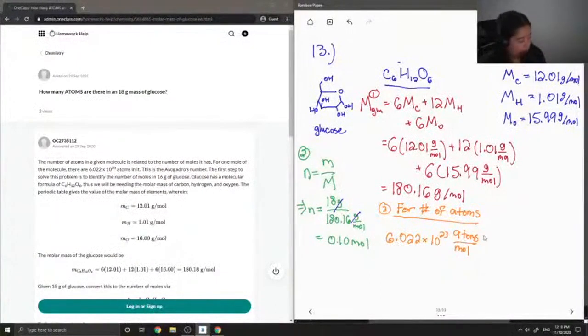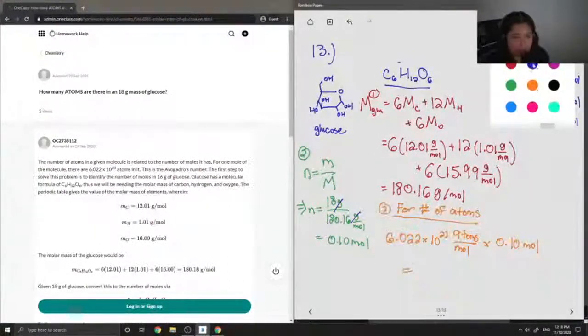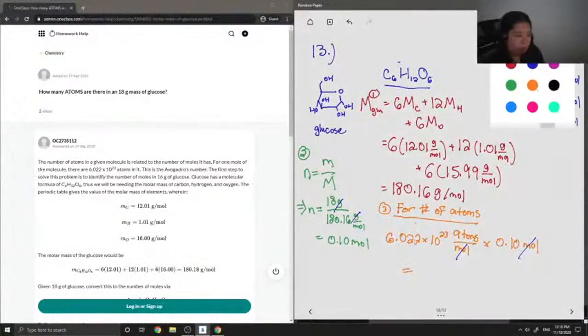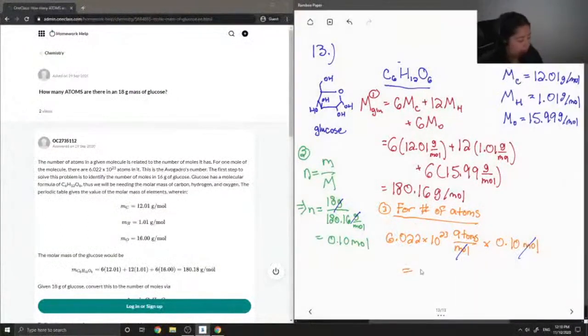Okay, so all we need to do is multiply Avogadro's number by the number of moles that we found in the previous step, which was 0.1 moles. And when we multiply the two together, you'll notice that the moles should cancel out and we're left with the number of atoms in the glucose, which is just 6.022 times 10 to the 22 atoms. So it's pretty much moving the decimal one place to the left.